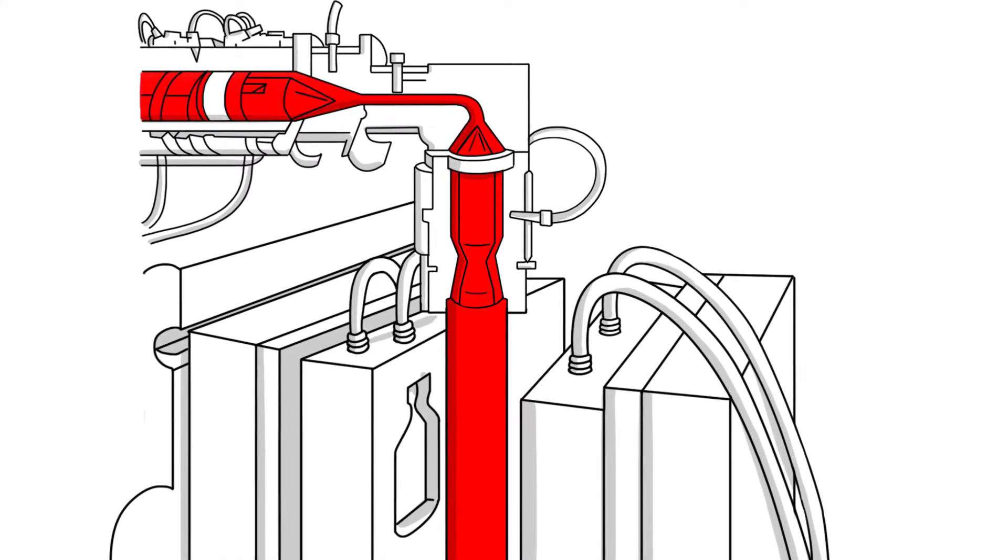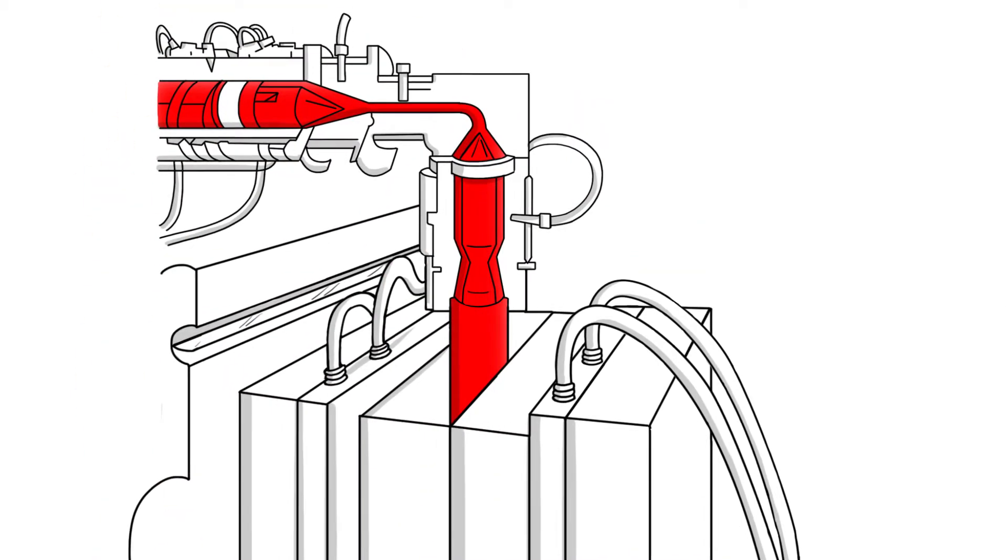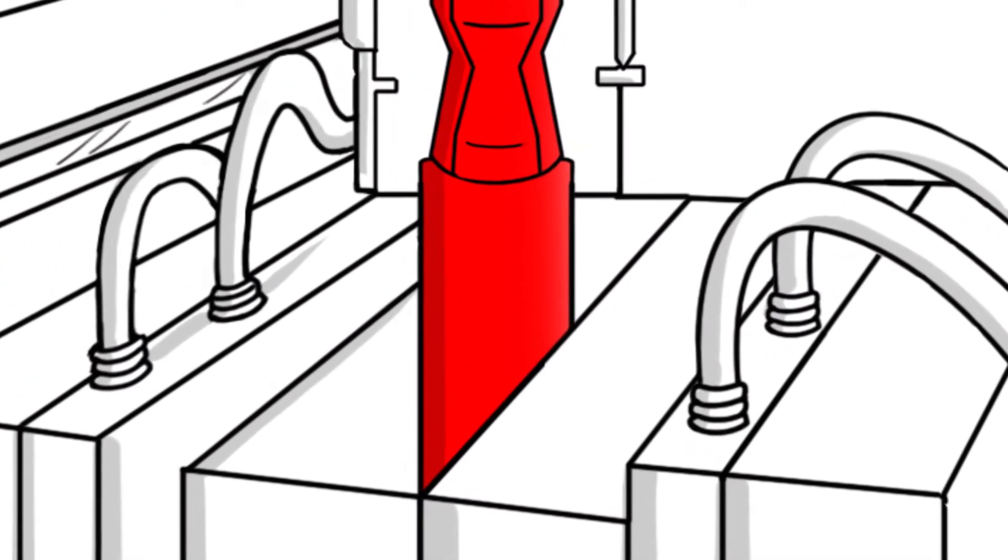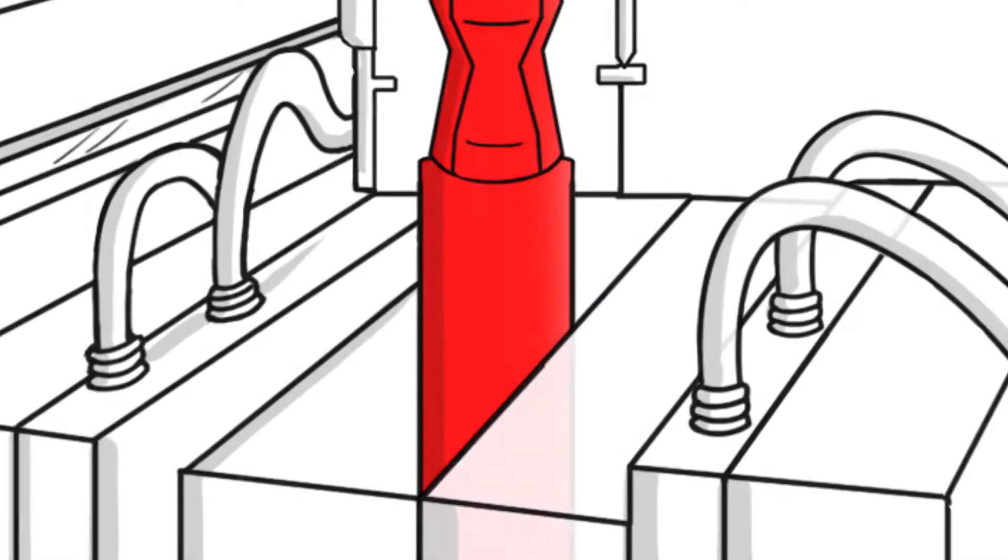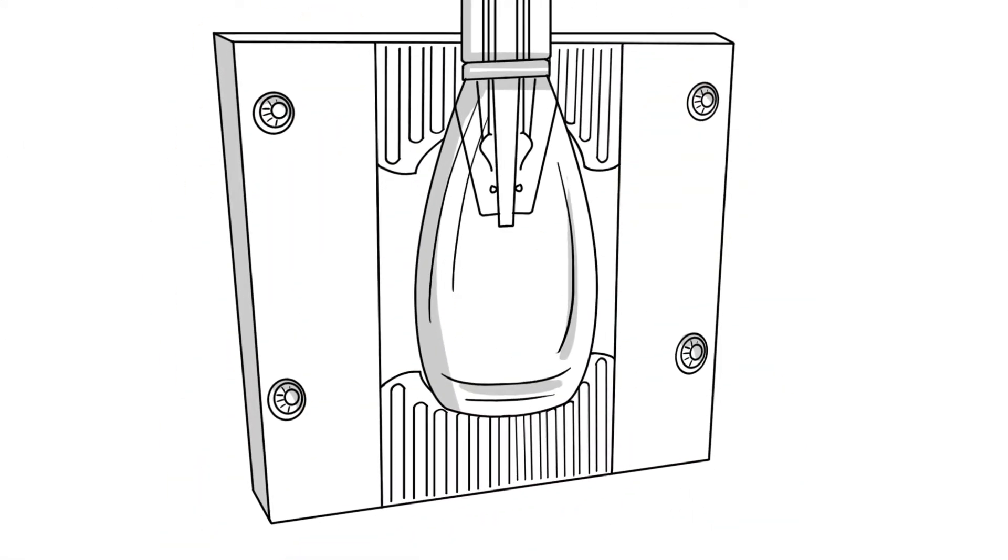At the desired length, the mold closes on the parison. The mold has two halves which close on the parison. A knife then cuts the parison at the top. A blow pin enters the mold, sealing off the top and forming the neck.